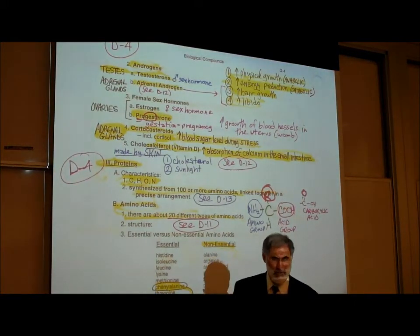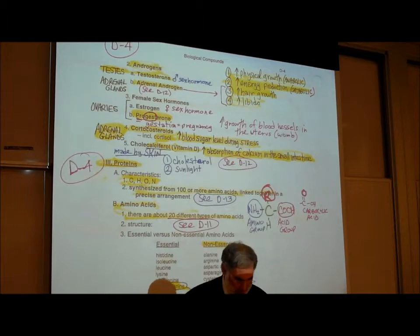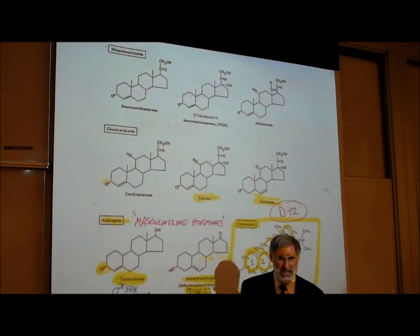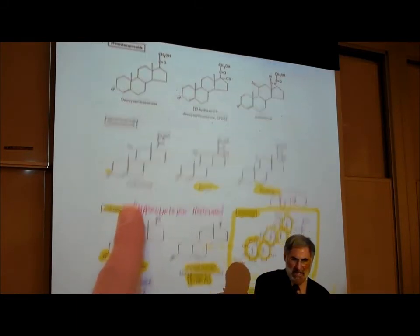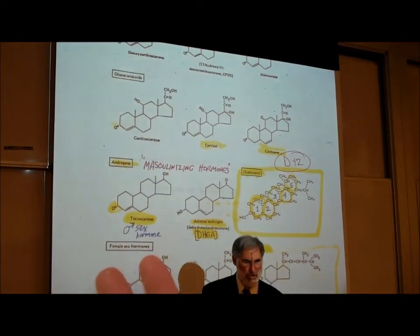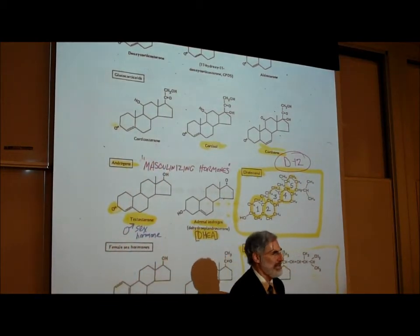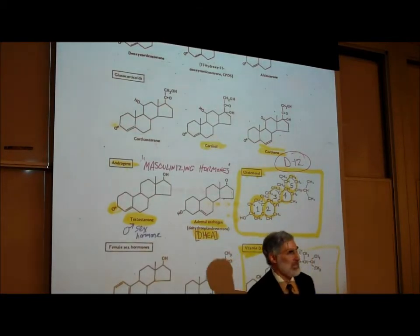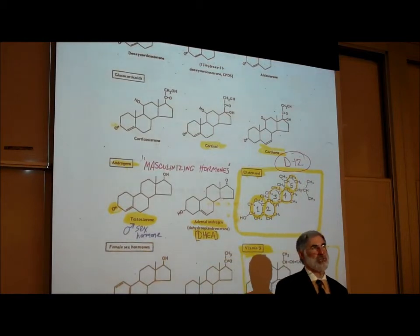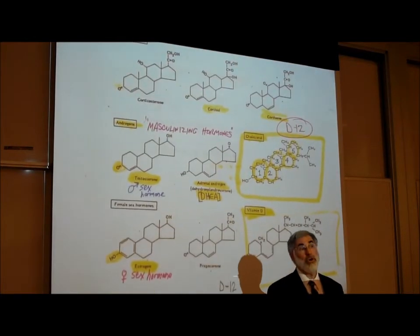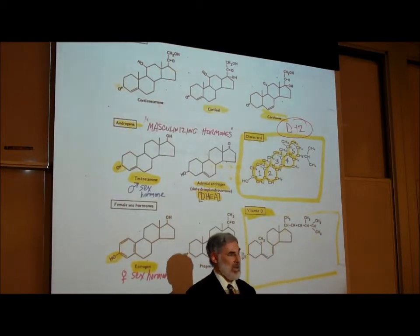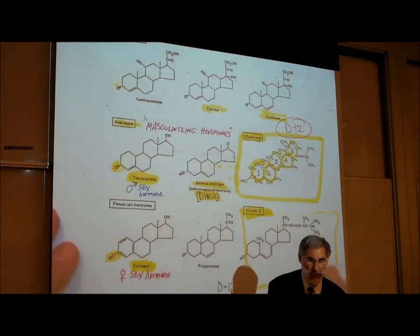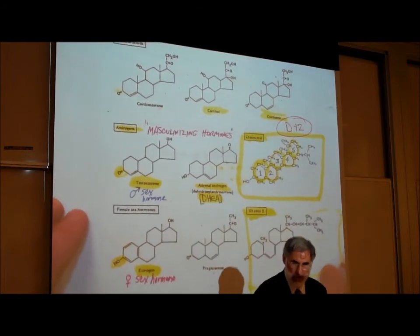One last comment about steroid hormones before we leave them: if you look at the names on page D12, you'll notice many of them have names like corticosterone, cortisone, testosterone, progesterone. Many of them — not all — have the ending O-N-E. Just as we recognize carbohydrates by the ending O-S-E, many steroid hormones end in O-N-E, like progesterone, testosterone, and cortisone.